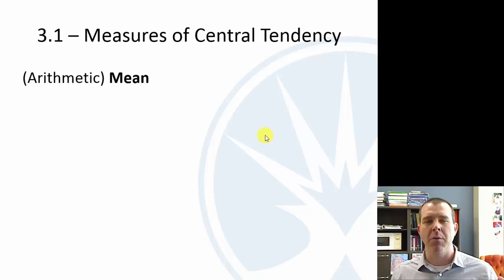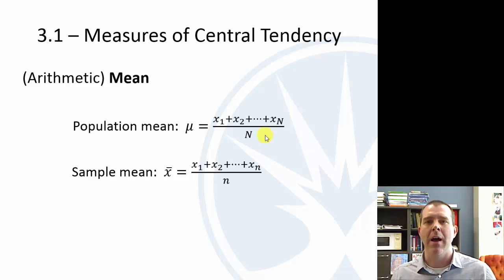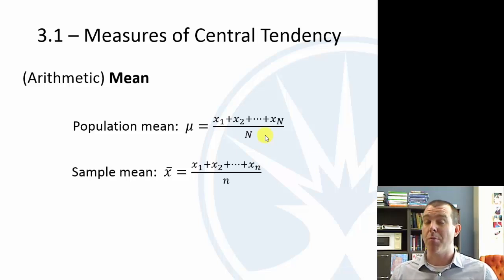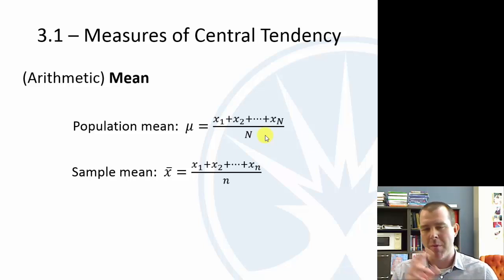The arithmetic mean — typically when we talk about mean in this course, we mean the arithmetic mean. There are other means like the geometric mean, but the arithmetic mean is basically the average you're familiar with: add them all up and divide by how many there are. For the population mean, we use the Greek letter mu. You add up all the observations and divide by the population size, which we denote with capital N. The sample mean is x-bar — you add them all up and divide by the sample size, lowercase n. Parameters use Greek letters; sample measures use the Roman or Latin alphabet.